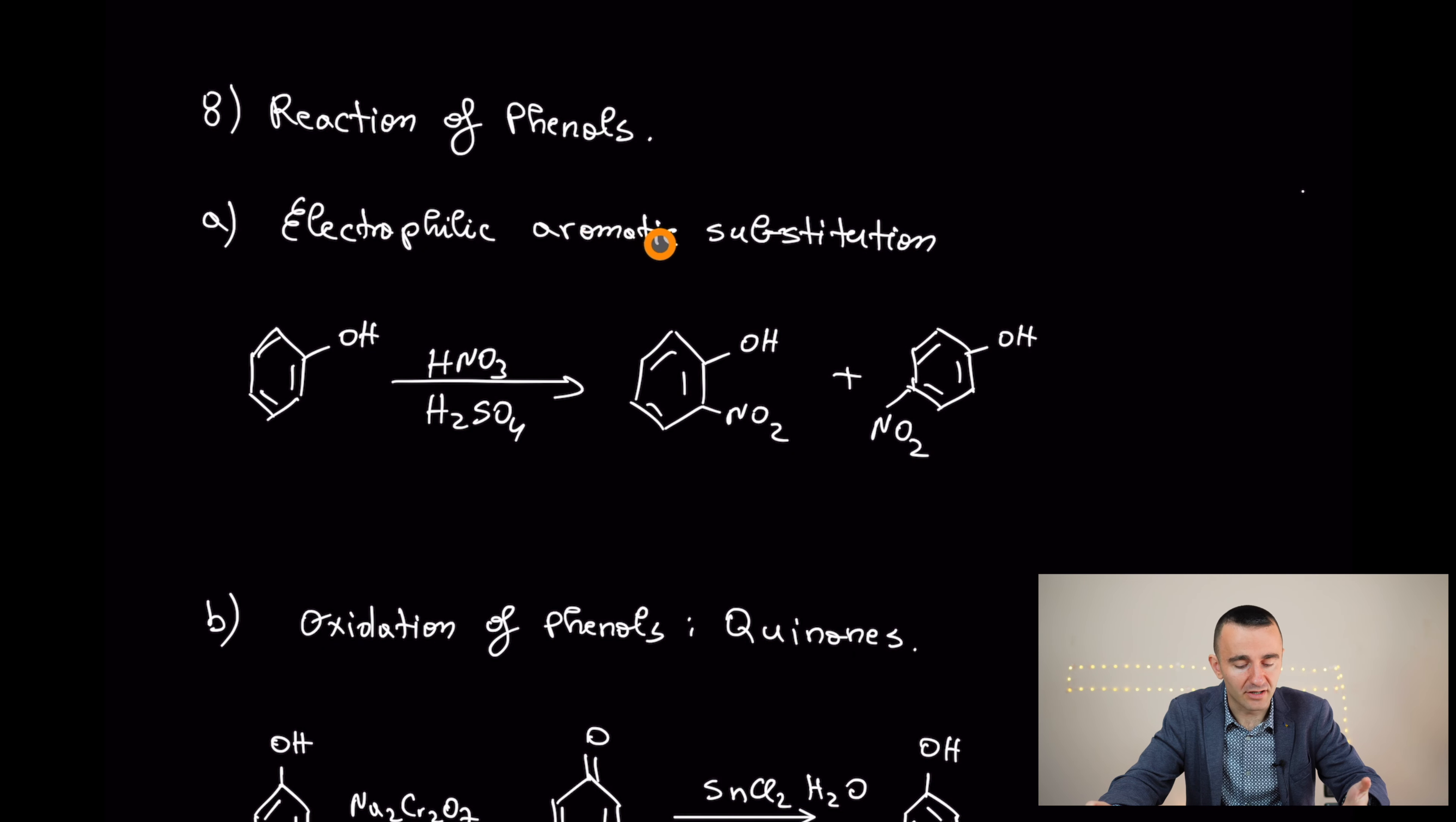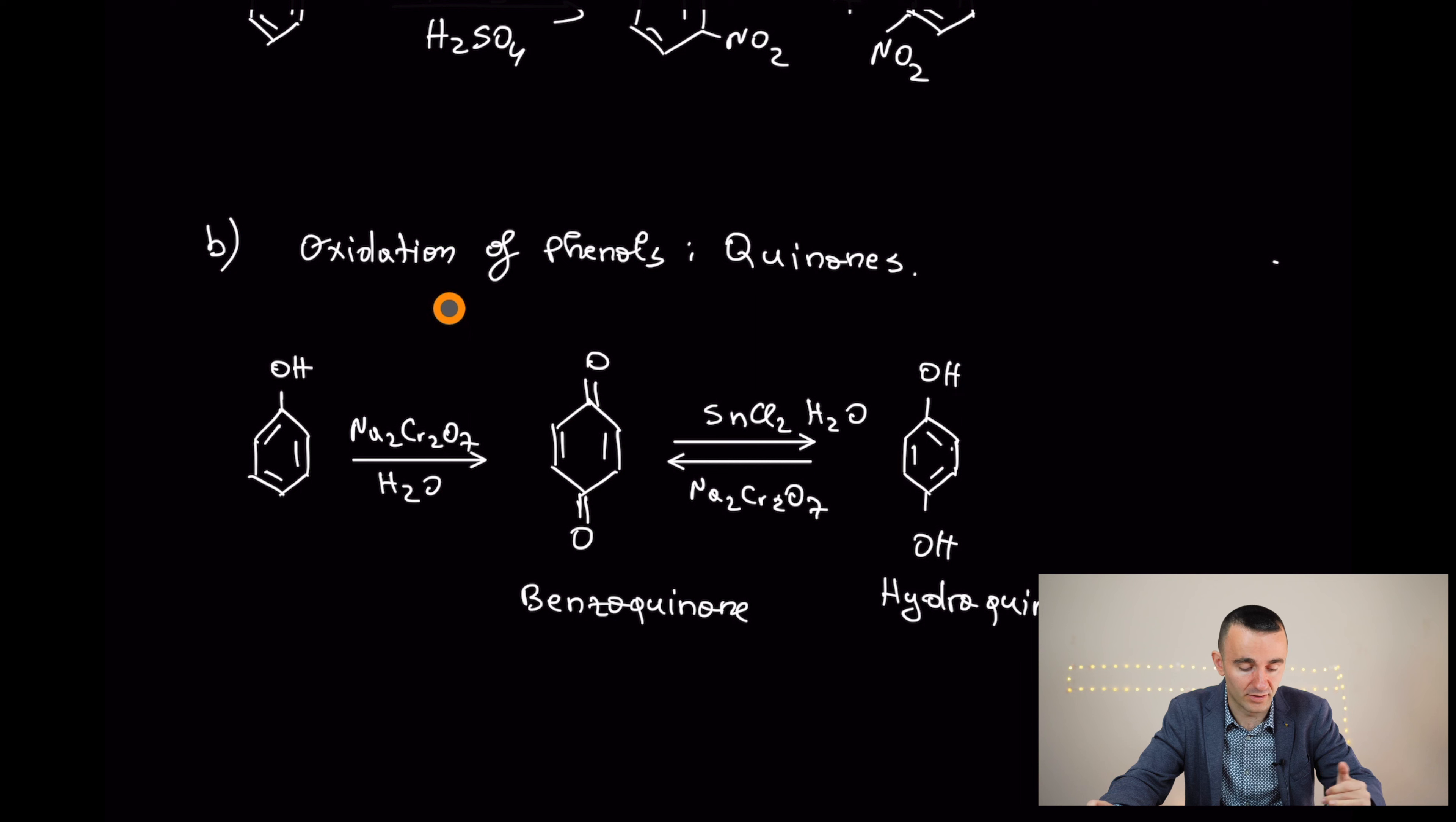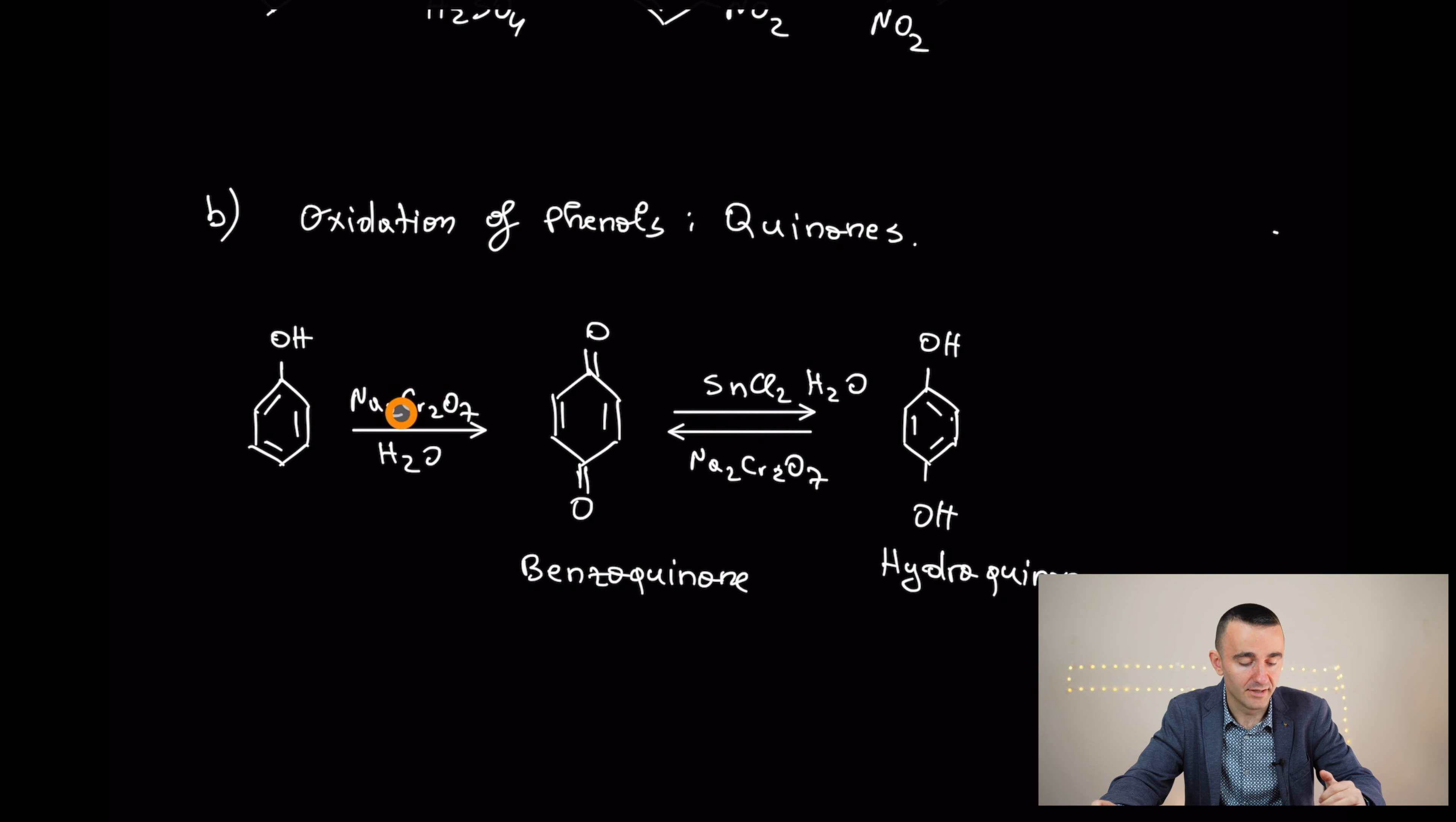In terms of reaction of phenols, electrophilic aromatic substitution, as we saw the reaction that phenol was an activating reagent, that reactivated in ortho-para position. For example, nitration here in ortho-para position. I'm not going to spend so much time with it because we treated in one of our previous videos. Oxidation of phenols to yield quinones. You can use sodium dichromate to yield a benzoquinone. And this reaction is reversible. If you reduce it with tin chloride, you're going to get the hydroquinone again.